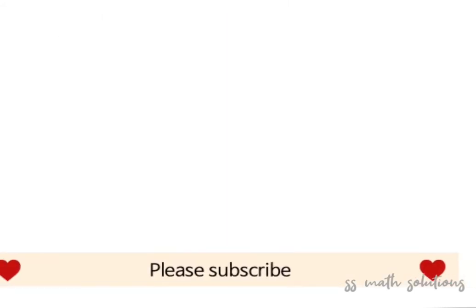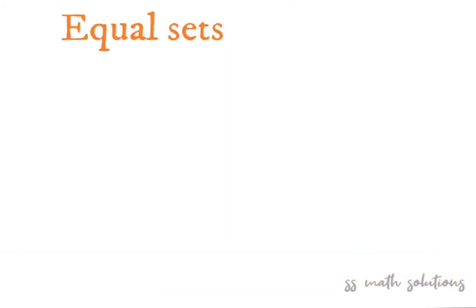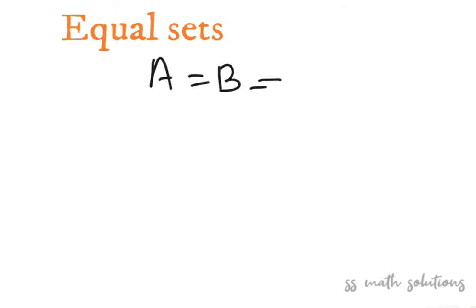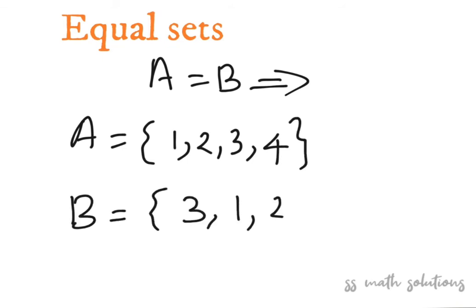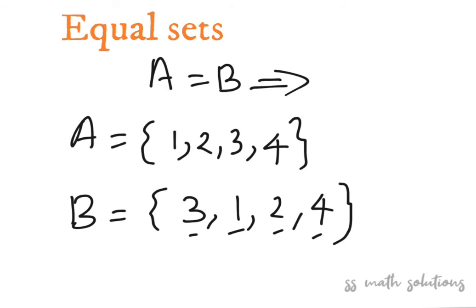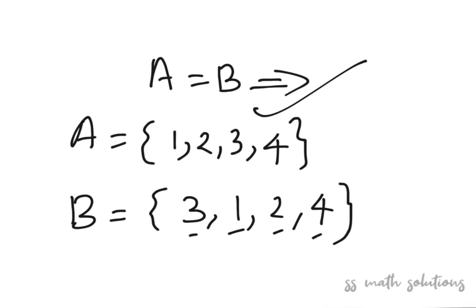The next one is equal sets. Two sets A and B are said to be equal if they have exactly the same elements. For example, A = {1, 2, 3, 4} and B = {3, 1, 2, 4}. Both A and B contain the elements 1, 2, 3, 4, so we can write A = B — they are equal sets.